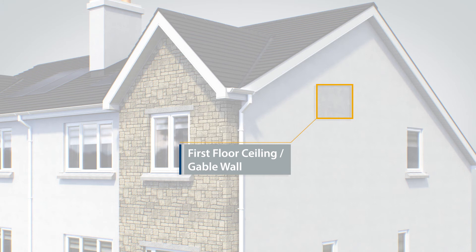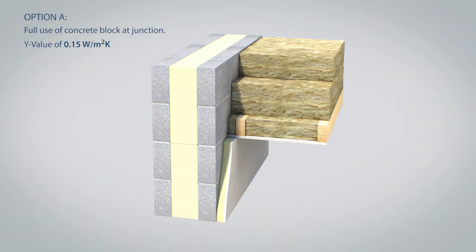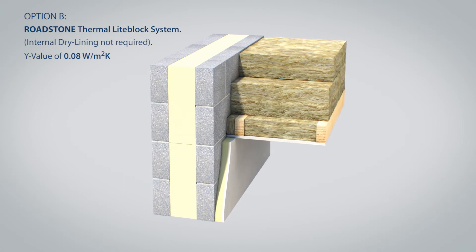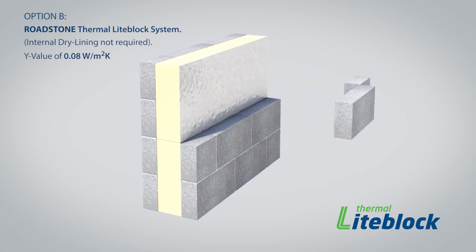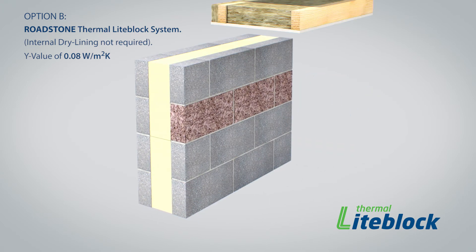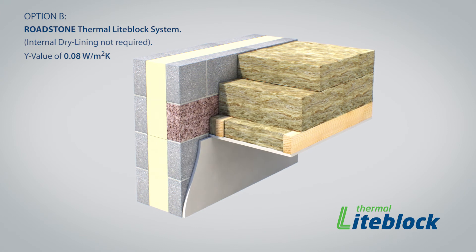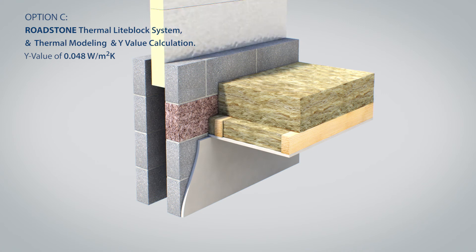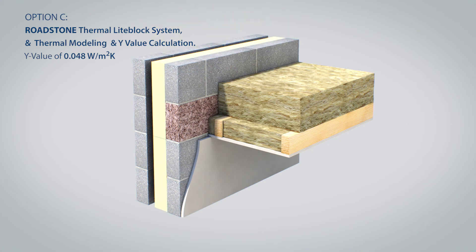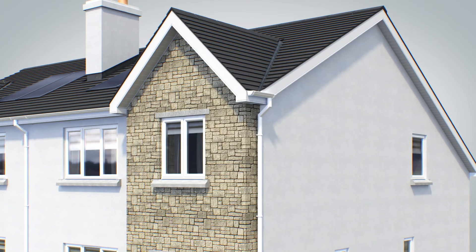Detail 5 is the junction of the first floor ceiling and gable wall. Option A shows a standard concrete block construction having a thermal bridge giving a Y-Value of 0.15. Option B shows Roadstone 100mm thermal light block, allowing the builder to take a Y-Value of 0.08 and remove the internal dry lining from the walls to accrue cost saving while maintaining the A2 house. In Option C, the builder avails of Roadstone's Y-Value calculation service to get a Y-Value of 0.048, thereby allowing a reduction in the thickness of insulation in the wall while still maintaining the A2 BER rating.